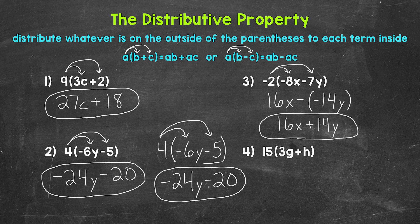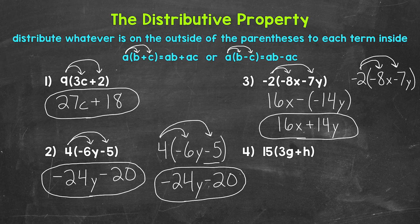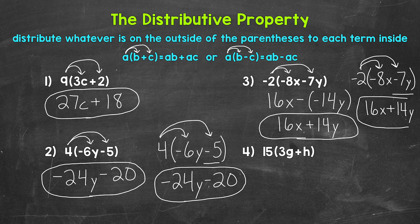Just like number 2, I'll go through this a slightly different way as far as thinking through the distributive property when it comes to subtraction. If we rewrite the expression and distribute that negative 2 to the negative 8x, and then distribute that negative 2 to the negative 7y — so we are including that sign in front of the term — negative 2 times negative 8x gives us 16x, and then negative 2 times negative 7y gives us a positive 14y, so plus 14y. We get the same thing there as well.